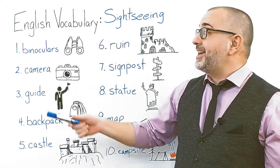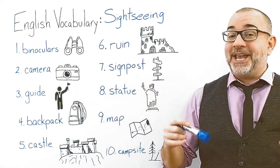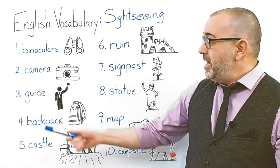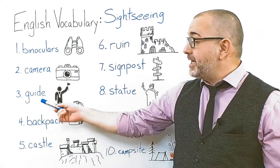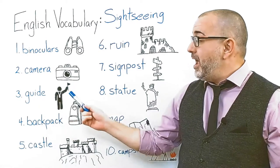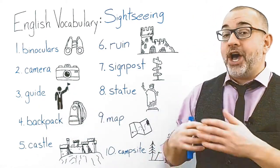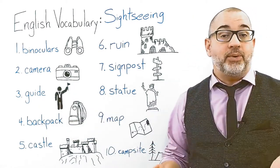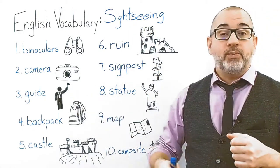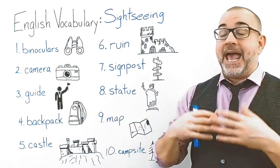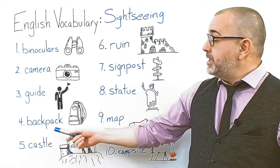Our second word is camera. Quite often you will use a camera when going sightseeing to take pictures. Number three is guide. A guide is someone who leads a group of people while sightseeing.